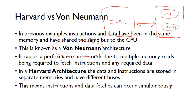This kind of architecture can cause a bottleneck, because when you want to do an operation, you need to get an instruction into the CPU and also get the data as well, so you need to read back and forth across this memory multiple times. This causes a bottleneck.